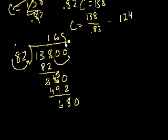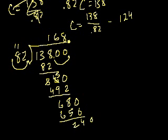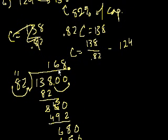And then we're left with 68, so 680. 82 goes into 680, 8 times. 8 times 82 is 656. And you're left with 240. So I think the decimal keeps going. But the total capacity is about 168.